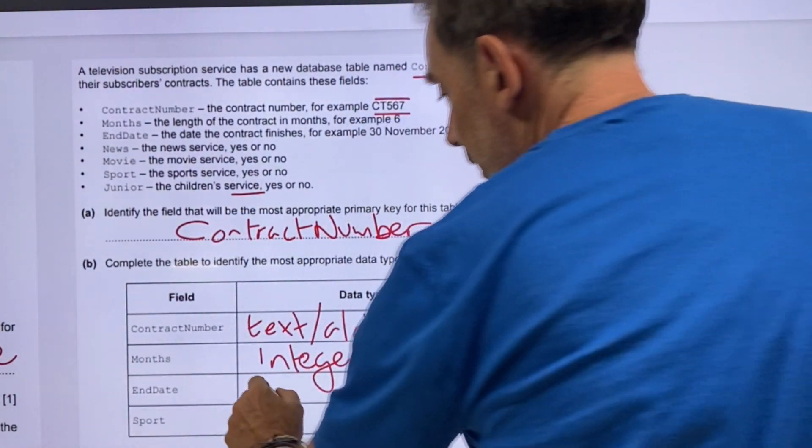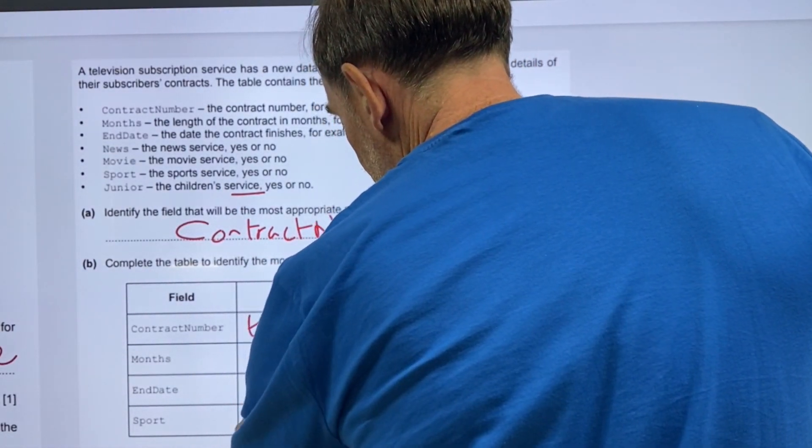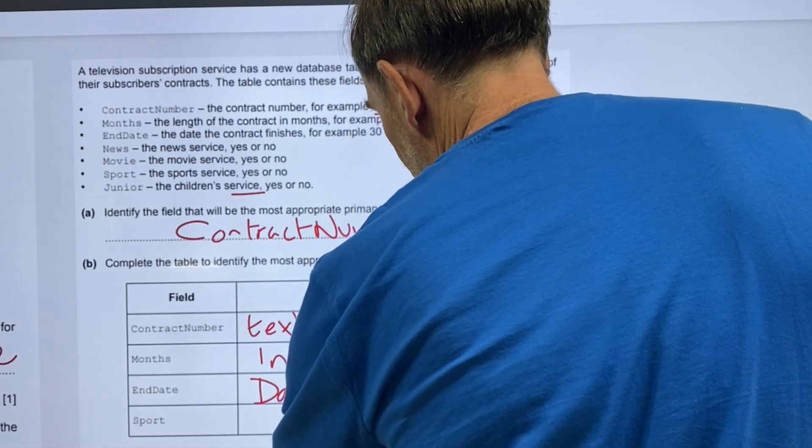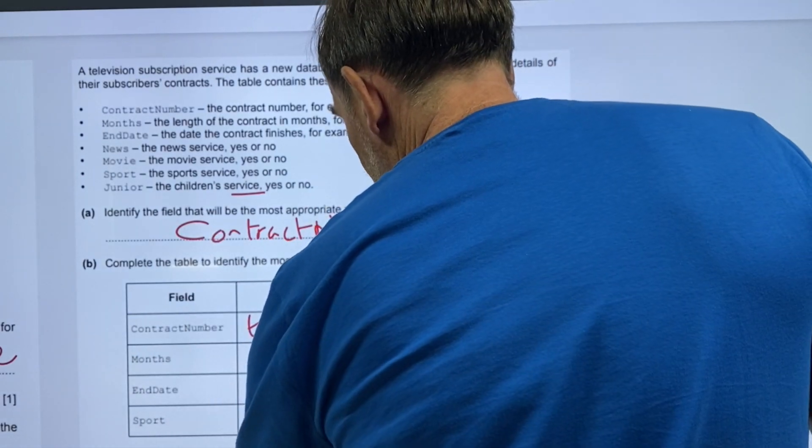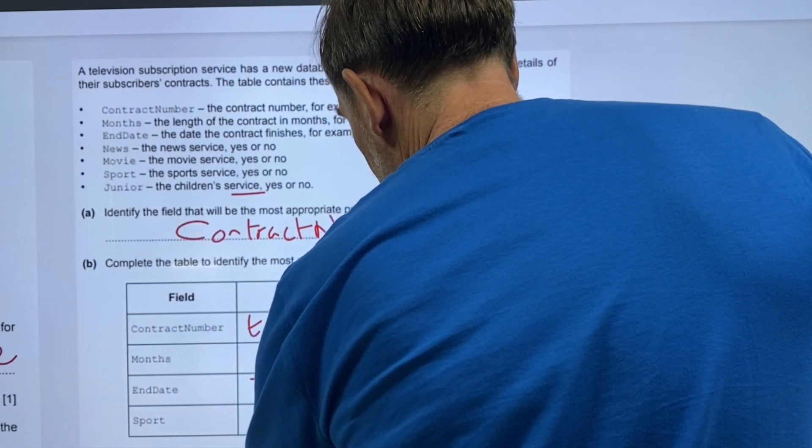Months is obviously a number, whole number, so that would be an integer. End date would be date slash time. And sport would be a Boolean. This is yes or no. Boolean.